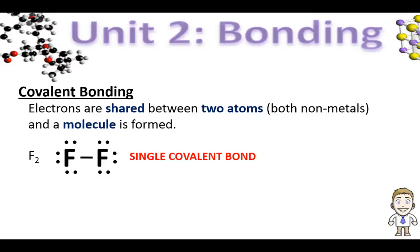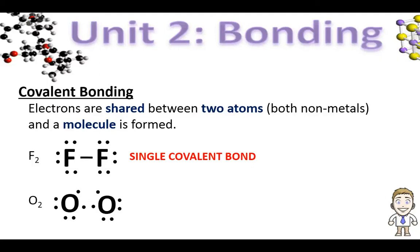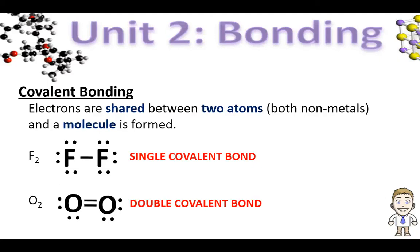We're going to look at two more examples of how this happens. First, with the oxygen molecule O2. Using two oxygen atoms, each oxygen has six valence electrons — that's not an octet. However, if they move close enough together to share electrons, they can actually share two pairs, creating what we call a double covalent bond.